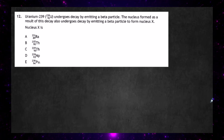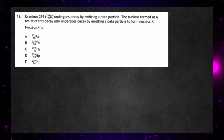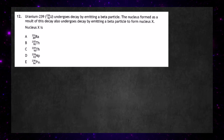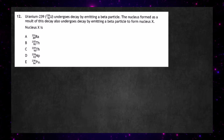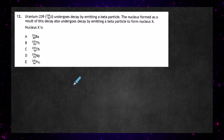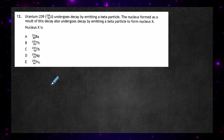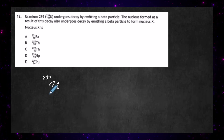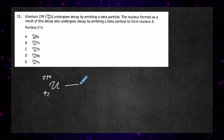Question 12 from the multiple choice: uranium-239 undergoes decay by emitting a beta particle. The nucleus formed also undergoes decay by emitting a beta particle to form nucleus X. We need to identify nucleus X. Start off by writing down uranium: mass number 239, atomic number 92.